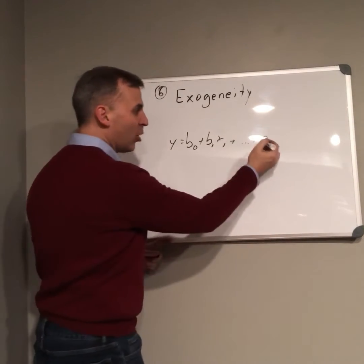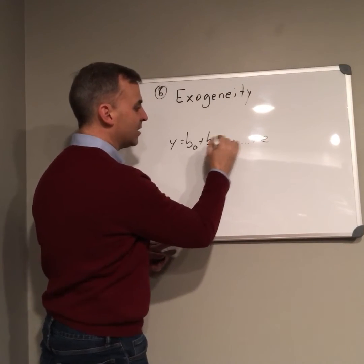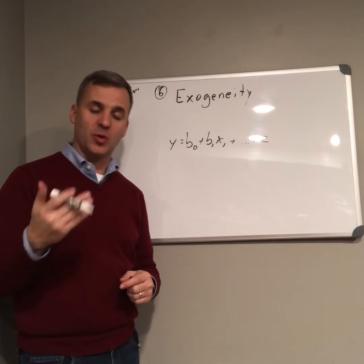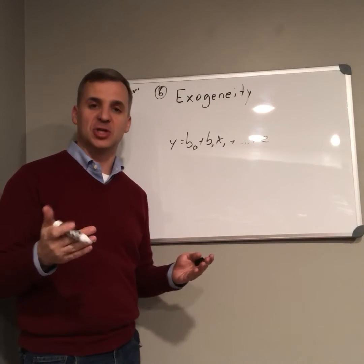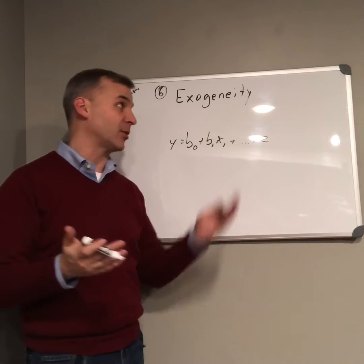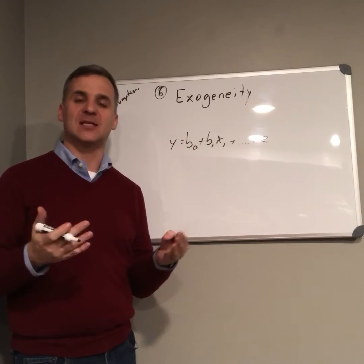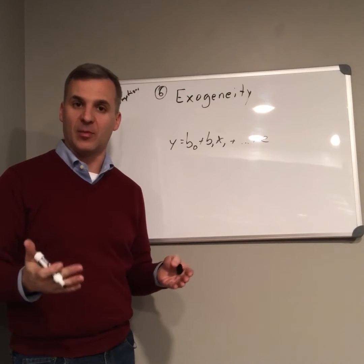That error of prediction cannot be related to any of our predictor variables. If it is related to our predictor variables, one or more of them, then we have a condition known as endogeneity as opposed to exogeneity. And when we have endogeneity, that is a symptom that we've omitted a variable.